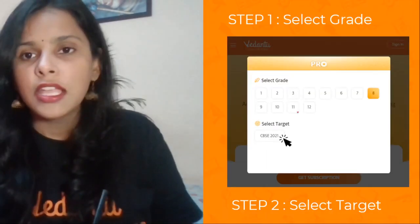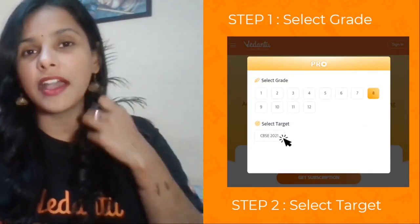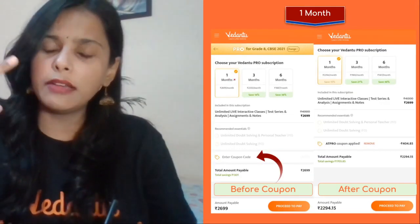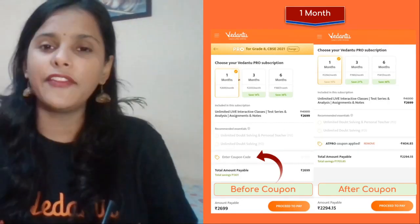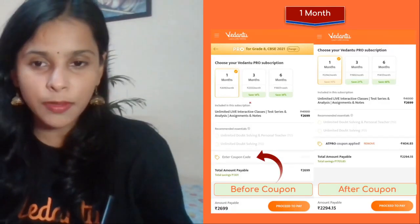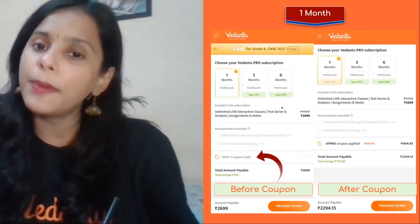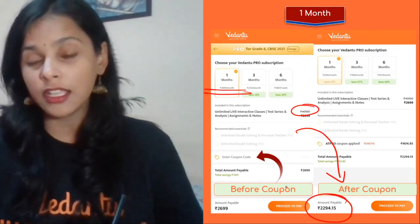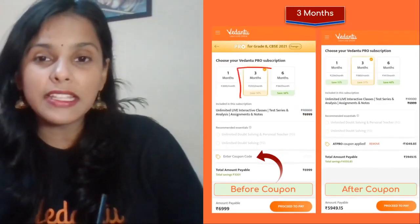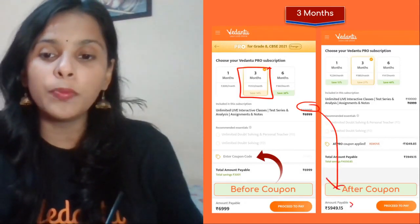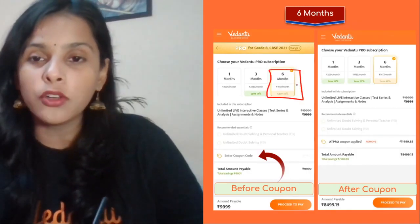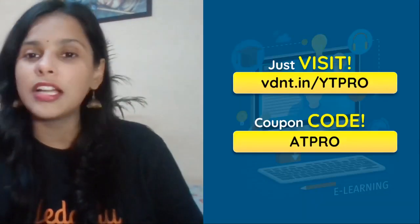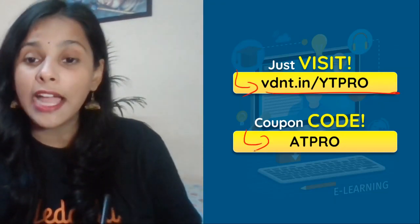So visit this link vdnt.in/ytpro. Choose your grade in which grade you are in, phir wahan per aapna target exam - CBSE, ICSE, Maharashtra board, jou bhi board hai, usko select karo. Check out the details properly, then click on get subscription. We have three plans - one month, three months, six months. One month ki plan 4000 ka hai, if you apply the coupon code you get it for 2294 rupees. Three months ka plan ten thousand ka hai, but if you apply the coupon code you get it for 5949. We have six months plan also - isme yaar maximum discount milta hai, iske per class ki cost 8 rupee hoti hai. So visit this link vdnt.in/mytpro and apply the coupon code that is 80pro.